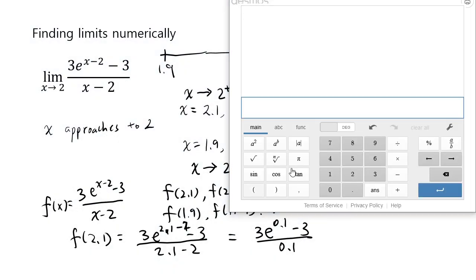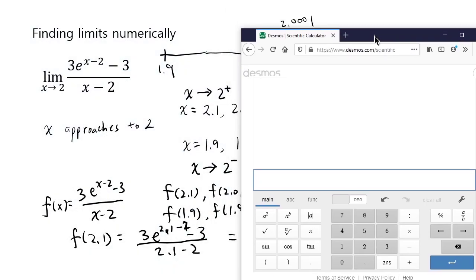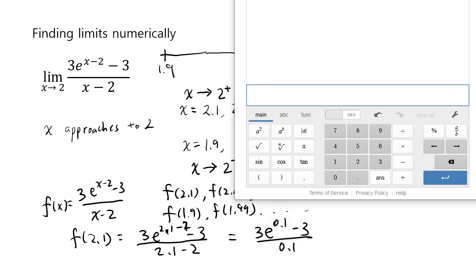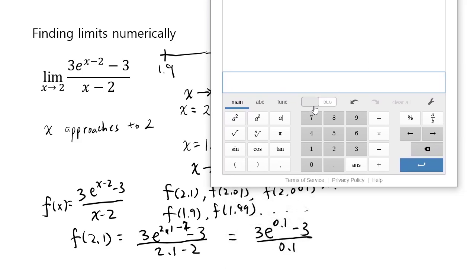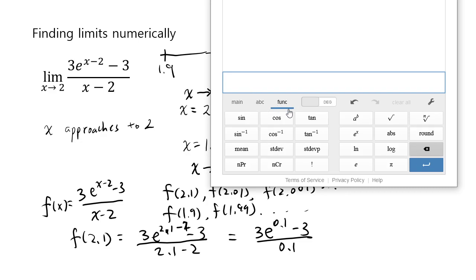Since I don't have my calculator inside this computer, I'm going to use a web-based calculator called Desmos. But basically, it's like your scientific calculator. You'll find it to be very similar to a scientific calculator. So let's see. Let's do 3 times e to the power of 0.1 minus 3. That's the numerator, right?